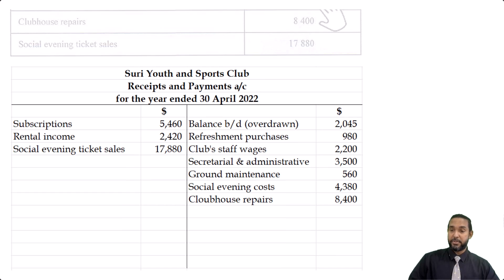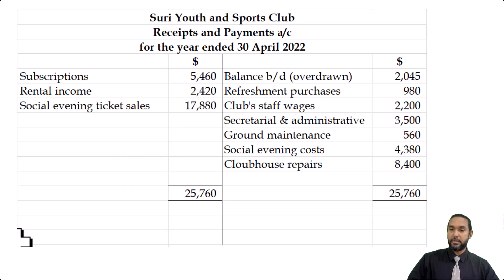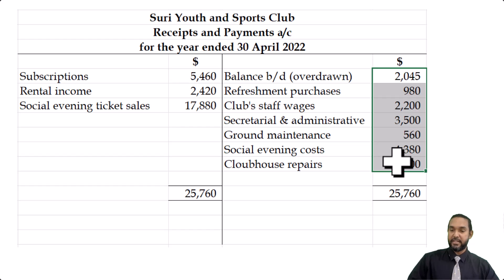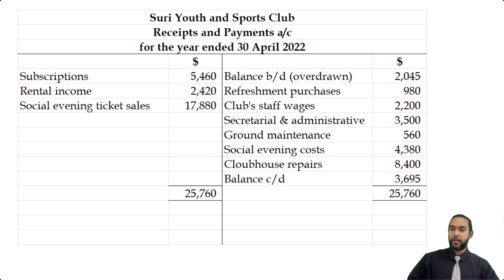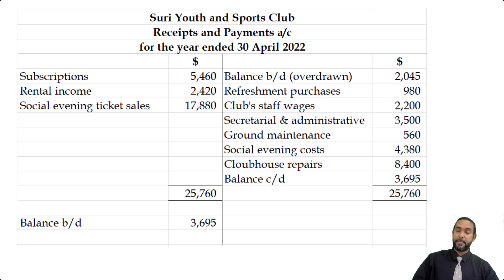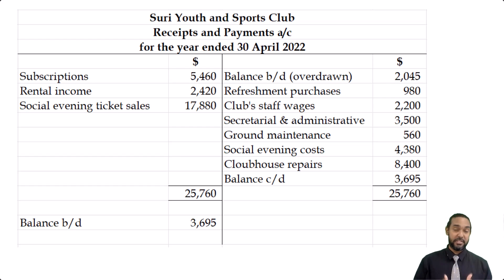All we have to do now is balance off. The total on the debit side is 25,760, and that matches across. If you add up the credit-side items, however, you're only going to get 22,065. So when you do the arithmetic, you close with a balance of 3,695, which you bring down on the debit side. So now we've gone from having an overdraft in our receipts and payments account to having a positive balance — money in the bank account.